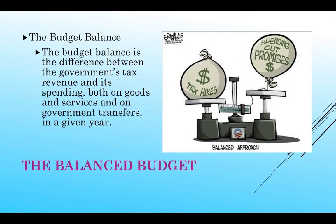The budget balance is the difference between the government's tax revenue — what it brings in — and what it spends, both on goods and services as well as transfer payments. Ideally, the government would like to spend money that it's collecting through tax revenue, but this does not always happen, which leads to deficits.